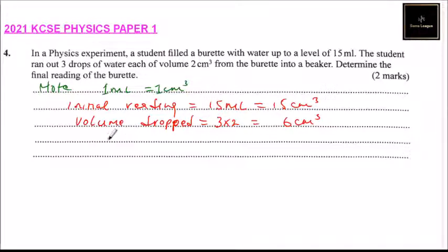Now, to get the new burette reading, what you do is equals to 15. Since you have dropped the reading, you are going to add 6, and you will be able to get this is equals to 21 cm³.